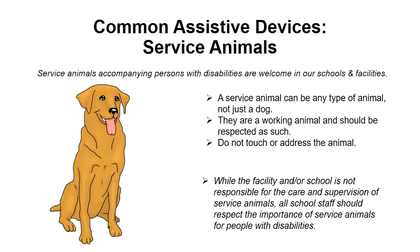Service Animals: Service animals accompanying persons with disabilities are welcome in our schools and facilities. A service animal can be any type of animal, not just a dog. They are a working animal and should be respected as such. Do not touch or address the animal. While the facility and/or school is not responsible for the care and supervision of service animals, all school staff should respect the importance of service animals for people with disabilities.